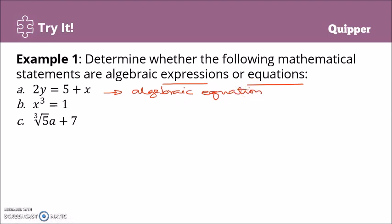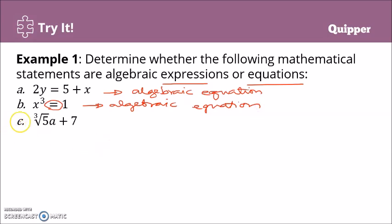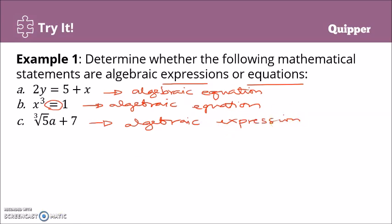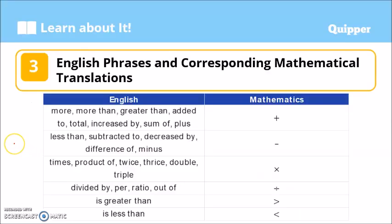For letter B, we have x cubed equals 1. We have an equal sign, so therefore this is an algebraic equation. For letter C, we have the cube root of 5a plus 7. We don't have an equal sign here, so therefore this is just a mere algebraic expression. All right, that's pretty easy! Now let's proceed to translating English sentences into mathematical sentences.